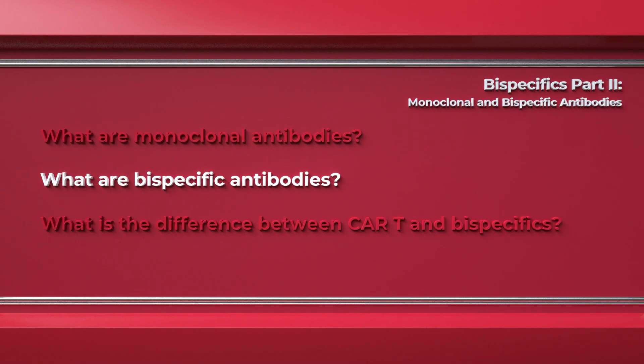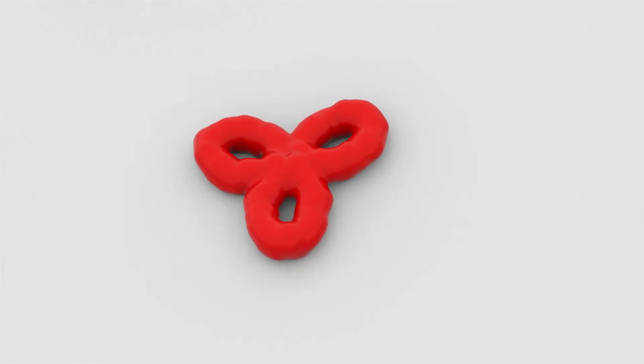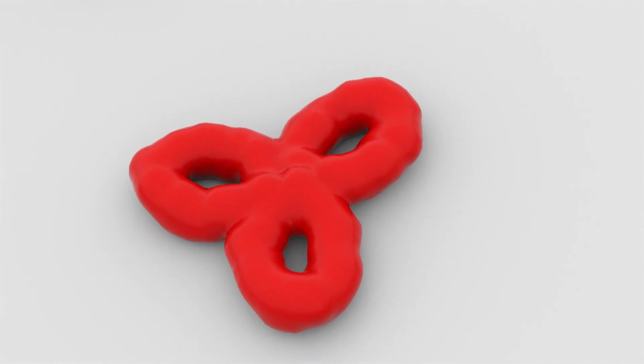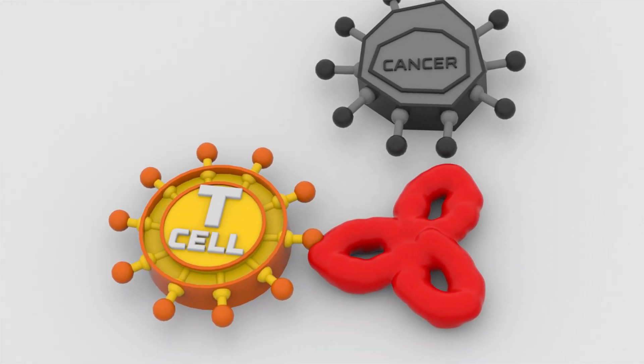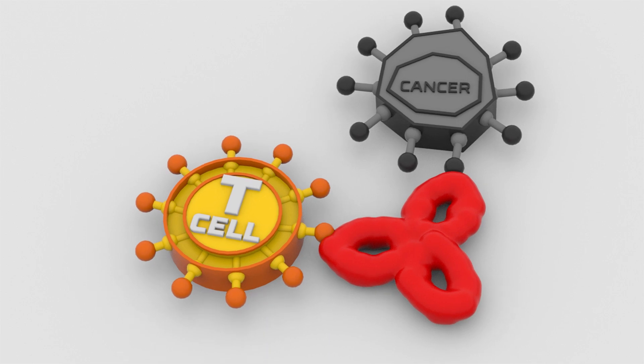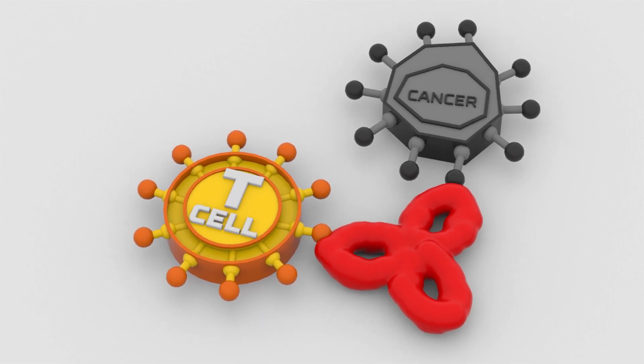Bispecific antibodies are similar to monoclonal antibodies, but as their name implies, they have two arms, allowing them to attach to two antigens — hence the word bispecific. It's kind of like having two monoclonal antibodies together.